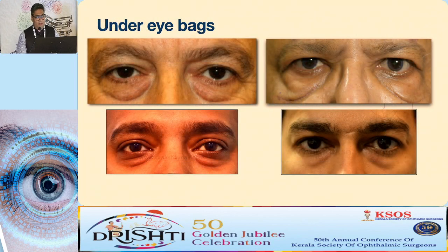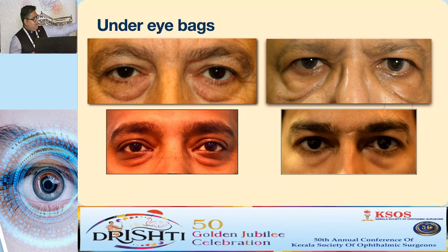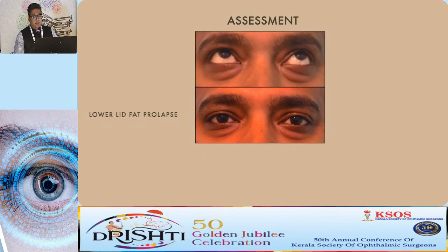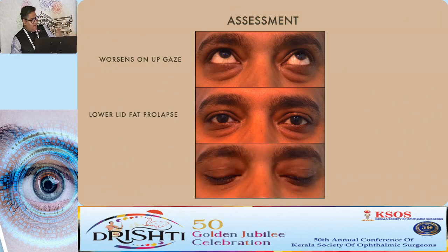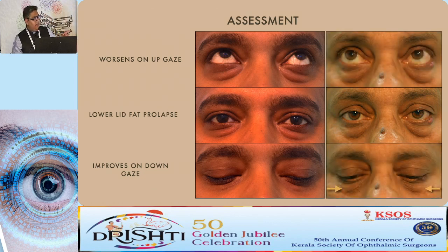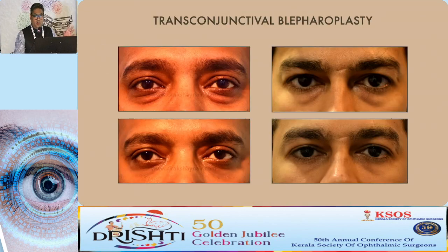Coming to under-eye bags: when patients present with fat prolapse, even in younger patients, you can confirm it is fat by asking them to look up — the orbital septum relaxes and fat bulges forward, worsening on upgaze; looking down tightens the septum and the fat improves. In older patients there is also inferior scleral show and excess skin, which may need a skin-tightening procedure as well. Refer these cases to your oculoplastic colleague for transcutaneous blepharoplasty.